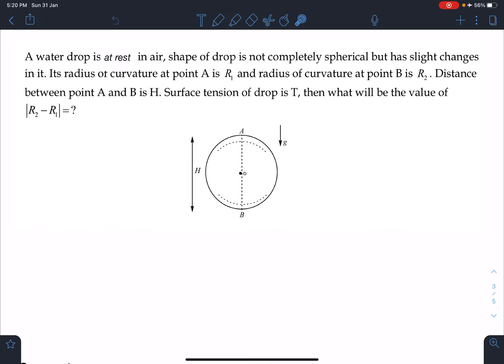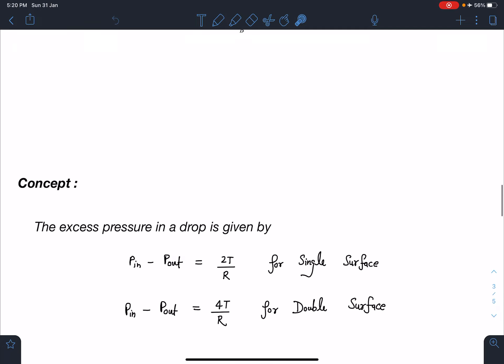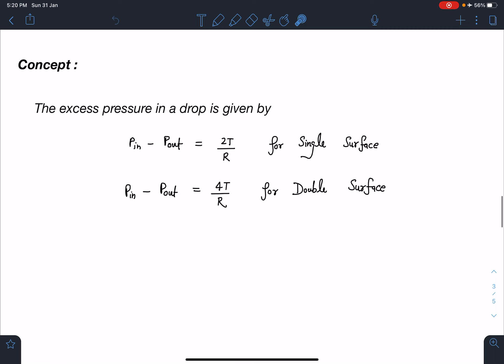Let's discuss the concept. The excess pressure inside a drop is given by P_in minus P_out equals 2T/R for a single liquid surface and 4T/R if there are two liquid surfaces. We are talking about a liquid drop, so it is an air-liquid interface, so one interface is present.